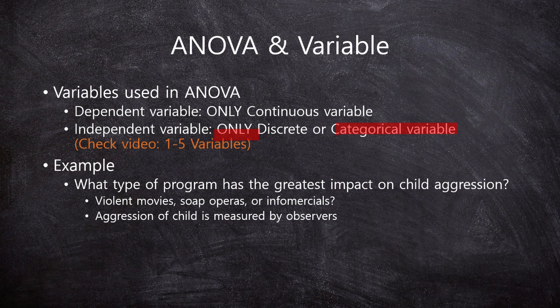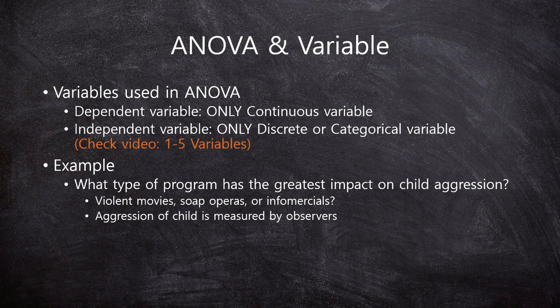If you don't understand what continuous and categorical variables are, you have to check video 1.5, variables in the series of fundamental statistics. This is very important because in ANOVA, the dependent variable should be continuous and the independent variable should be a categorical variable.